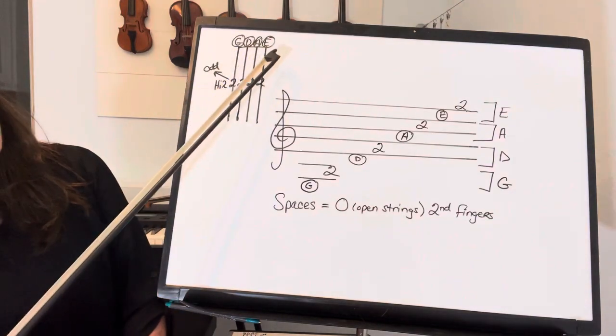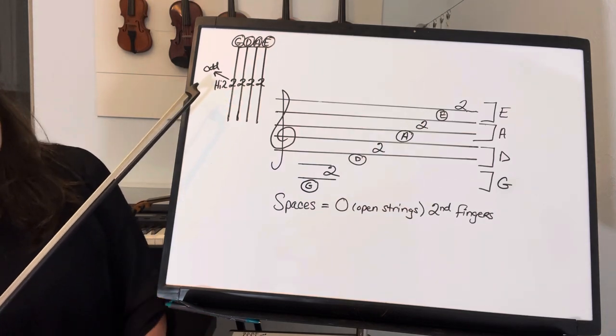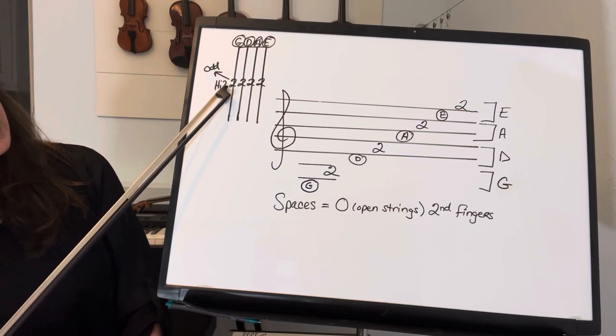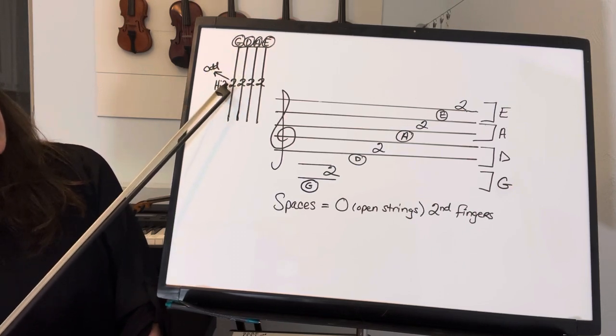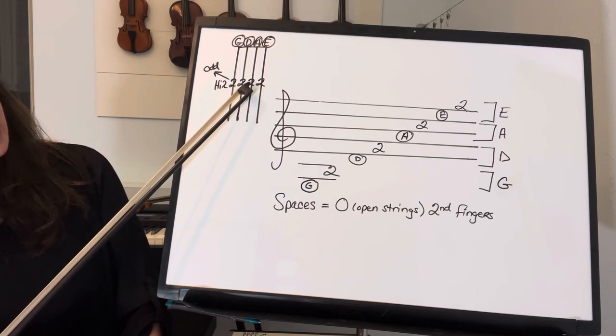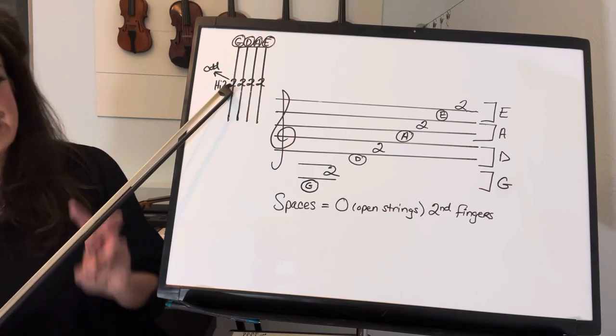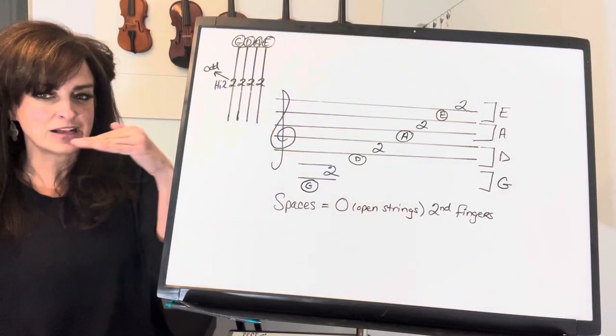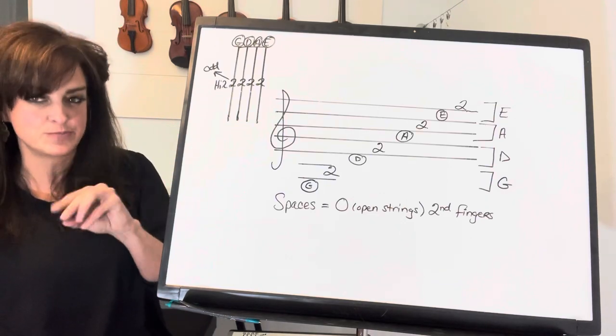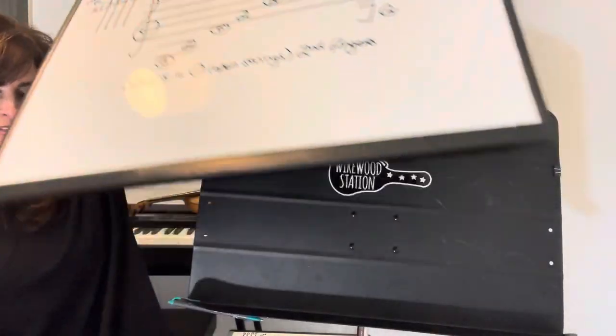Here I have a little finger chart of what our fingers look like on our fingerboard. Opens are just basically open, and then I'm doing a high two position. On the G string that's B natural, D string F sharp, A string C sharp, E string G sharp. So our G string second finger is kind of the oddball - everybody else in that two position is going to be sharp, but G string second finger B is a B natural.